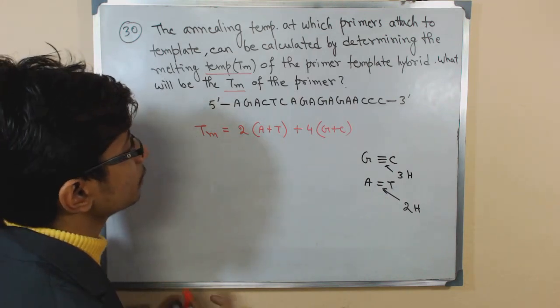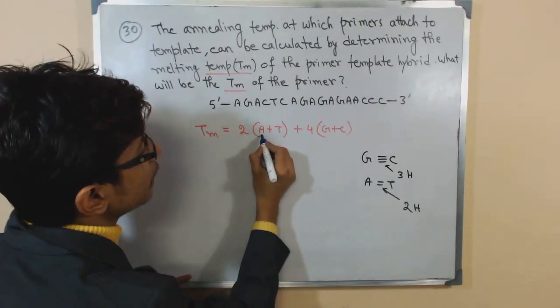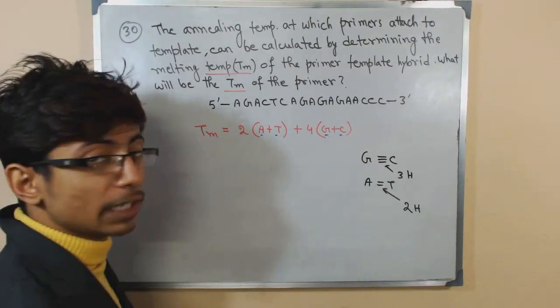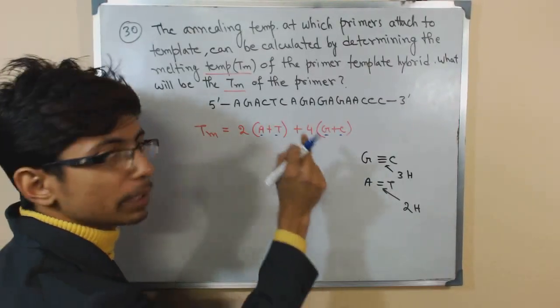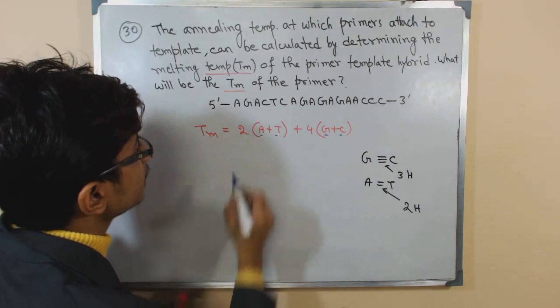In this formula, we need to calculate each of those bases that are present - the number of bases like adenine, thymine, guanine and cytosine. Let us look at it.